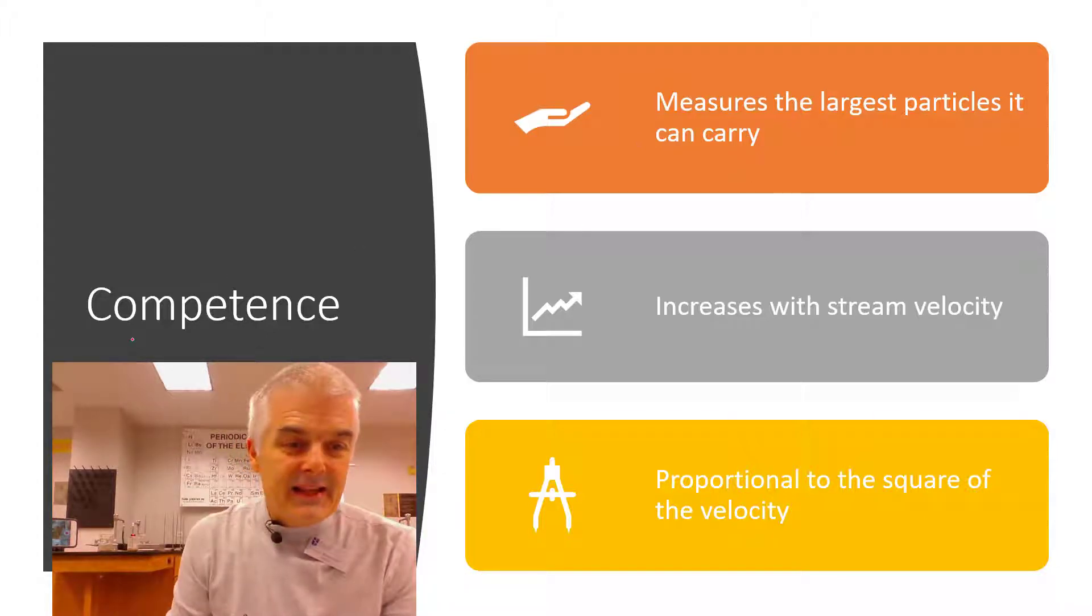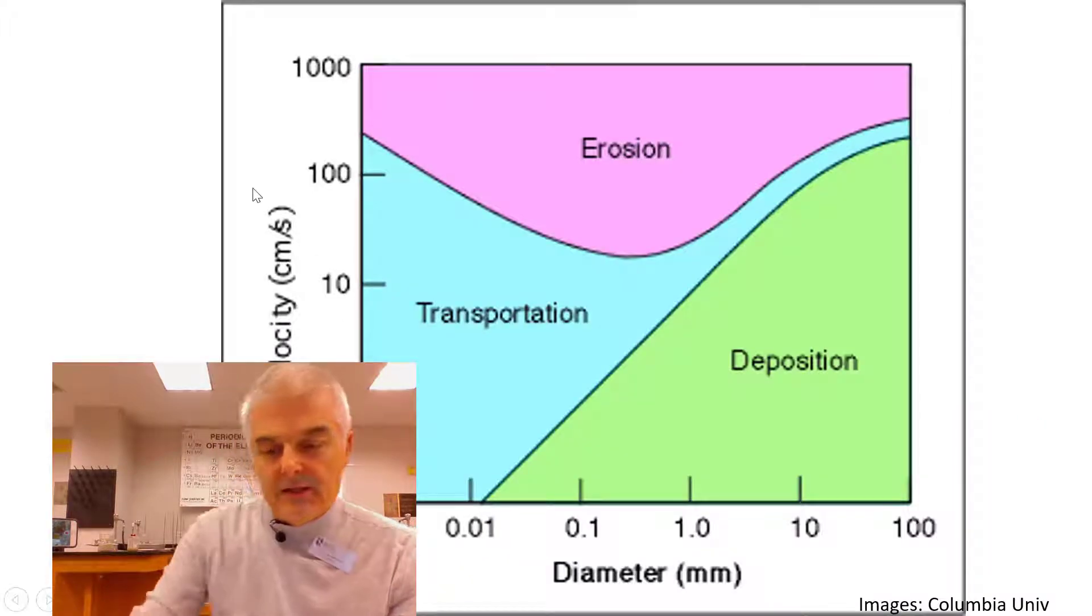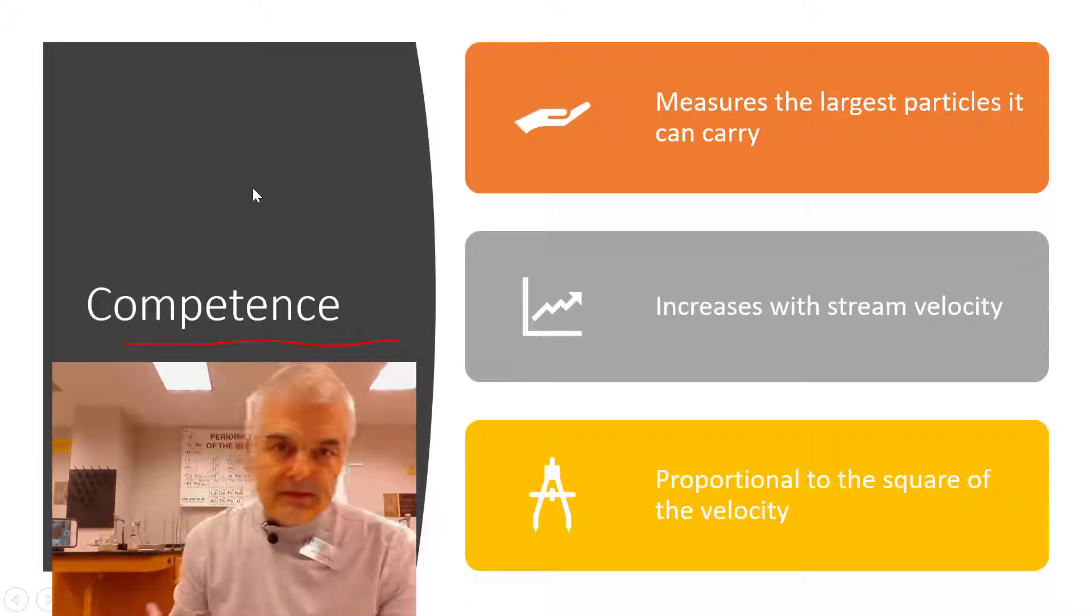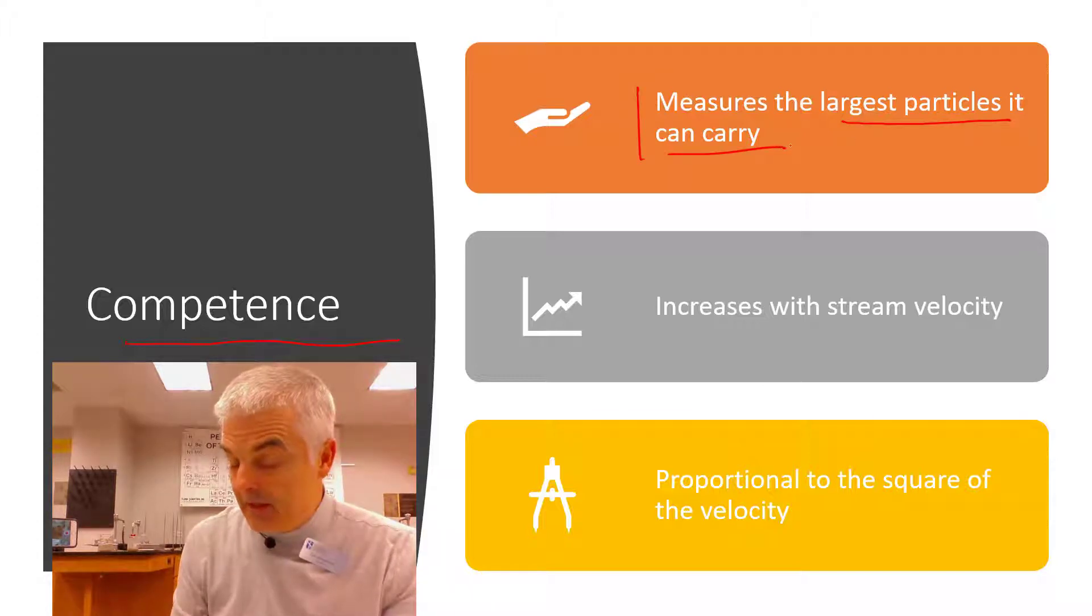All right. And then here's a new term. And this is a little confusing, I think. And the term is called competence. Now competence measures, this is important, the largest particles it can carry. All right. So a river can carry, and this is the ones that are moving, it can't carry a big boulder, or can it? It can carry a big boulder, but sometimes it has a higher capacity or capacitance for it to move water.